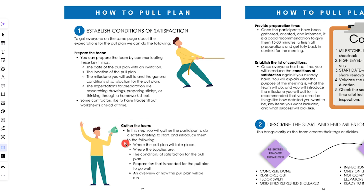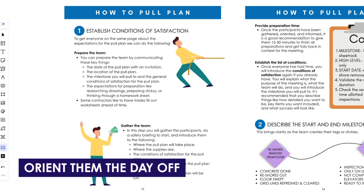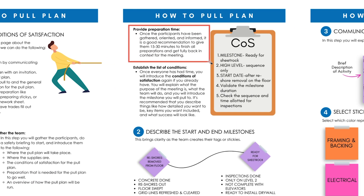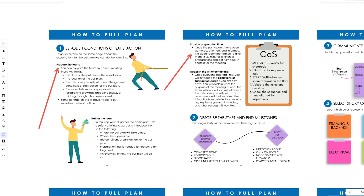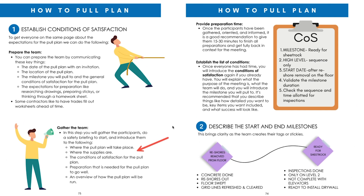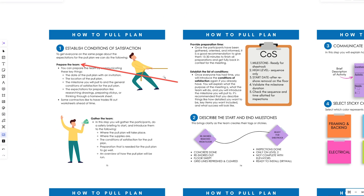When we're there, we gather the team and talk about where the pull plan is taking place, where the supplies are, the conditions of satisfaction, and do an overview to orient them. I like to give everybody 15 to 30 minutes at the beginning to finish preparations — review drawings, go through activities, prepare stickies — so everyone is fully in context.